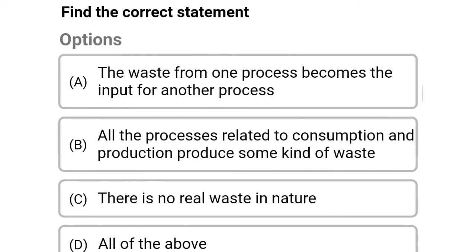Next question: find the correct statement — option A: the waste from one process becomes the input of another process, option B: all processes related to consumption and production produce some kind of waste, option C: there is no real waste in nature, option D: all the above. The correct answer is option D, all the above.